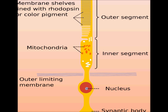The mitochondria provide energy for rod cells and are situated in the inner segment of the rod cells. The nucleus, or the brain of the rod cells, is also located here, and the synaptic body connects one rod cell to another.